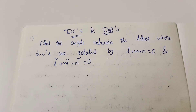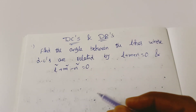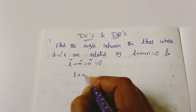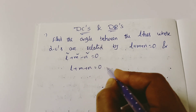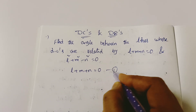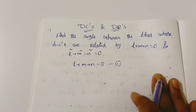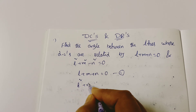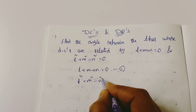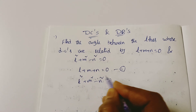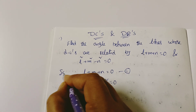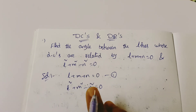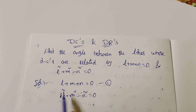Let us begin. Two lines are given, right? The first equation is L plus M plus N equal to 0. The second equation is L squared plus M squared minus N squared equal to 0. These are the given lines.